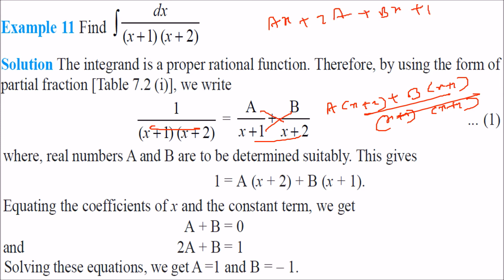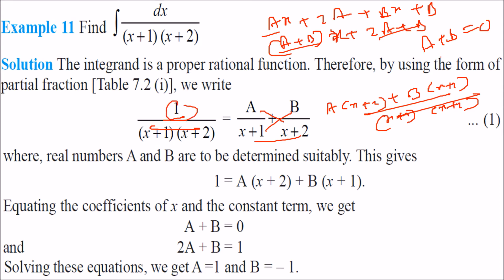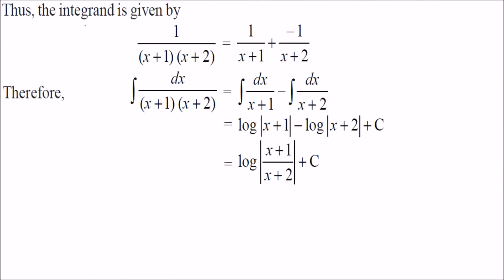Expanding the numerator: A(x+2) + B(x+1) = (A+B)x + (2A+B). Equating coefficients: since there is no x term on the left, A+B = 0; and the constant term gives 2A+B = 1. Solving these two equations gives A = 1 and B = −1. So the integrand becomes 1/(x+1) − 1/(x+2), and integrating gives log|x+1| − log|x+2|, which equals log|(x+1)/(x+2)|.